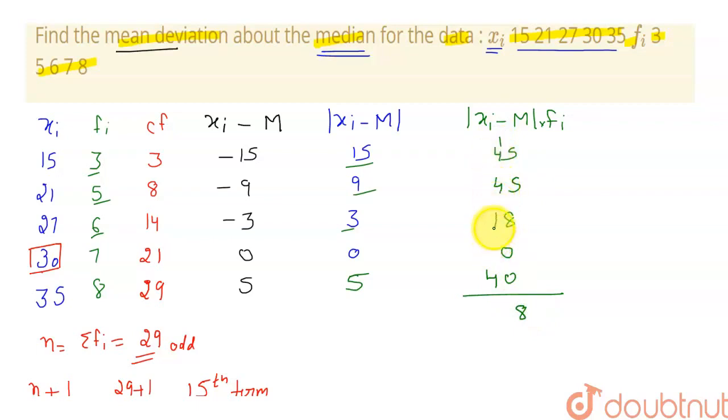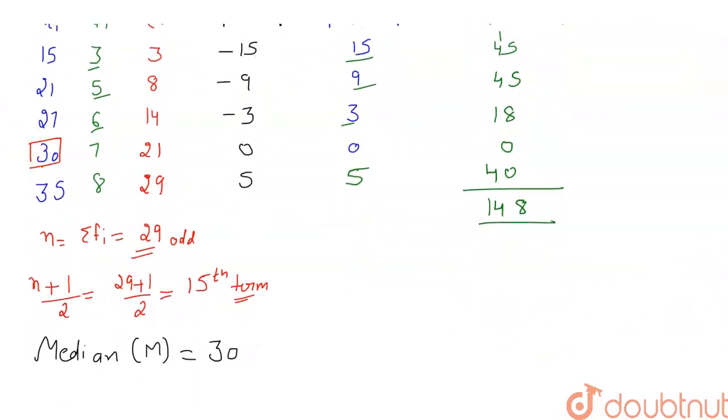So it is coming out to be 148. Now I have to apply my formula for calculating mean deviation. See mean deviation about median M is defined as sigma of |x_i minus M| times f_i divided by sigma of f_i.